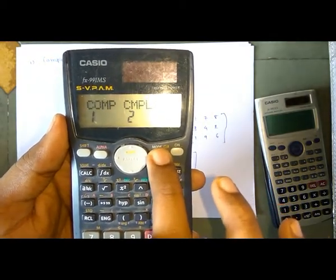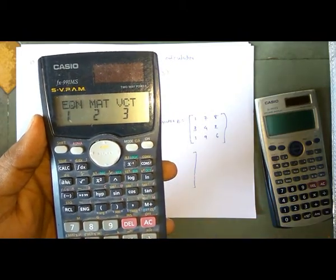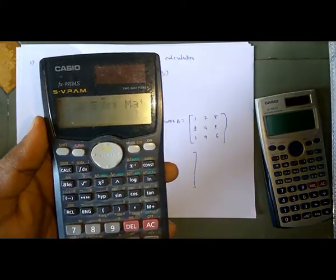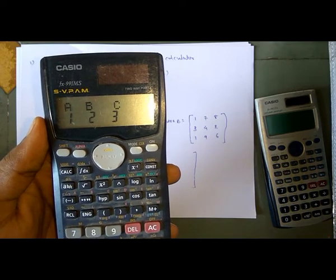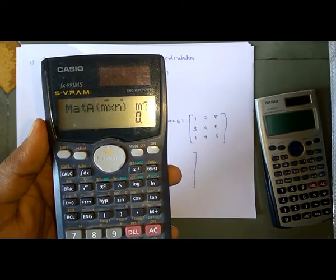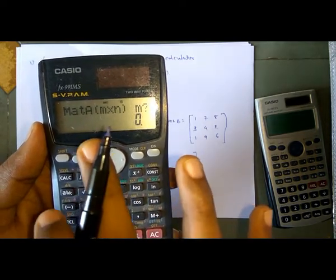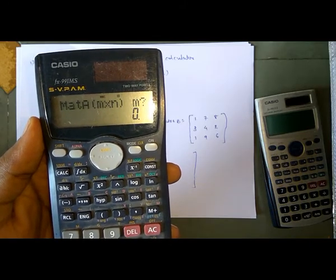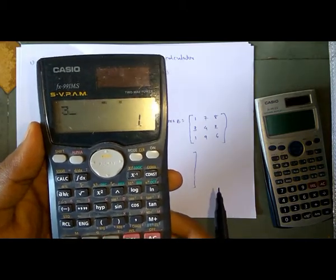Then press Mode three times, and press 2 for matrix. Then press Shift Matrix and insert the dimension. For matrix A, press 1. It will ask for the number of rows and columns. Since we have 3 rows and 3 columns, press 3, then press 3 again.